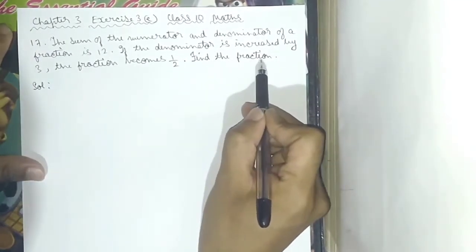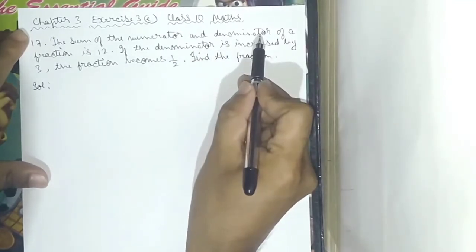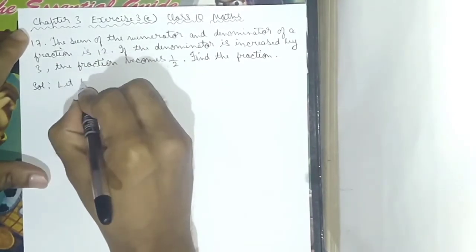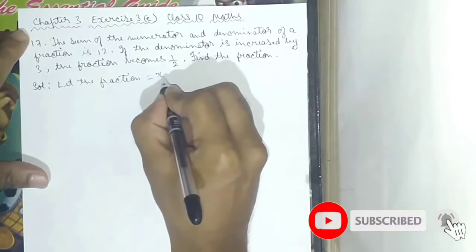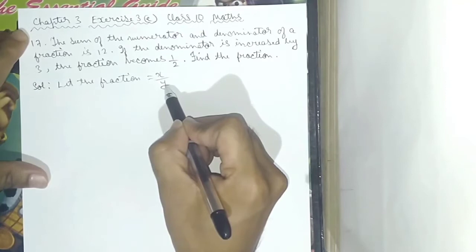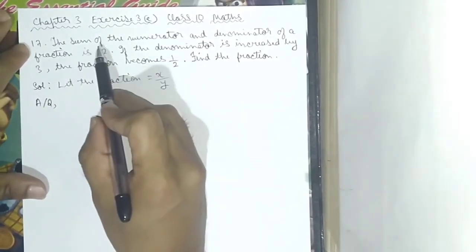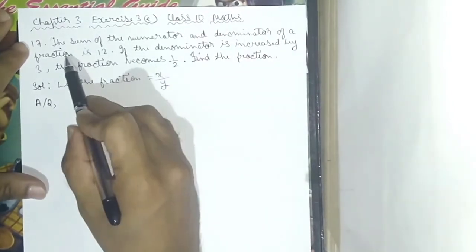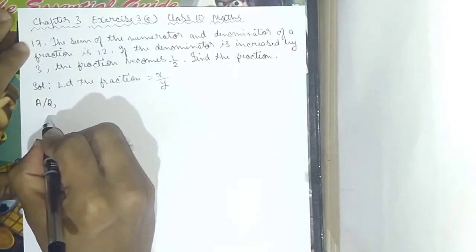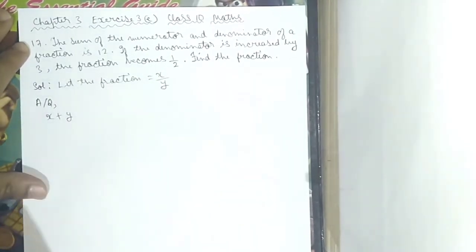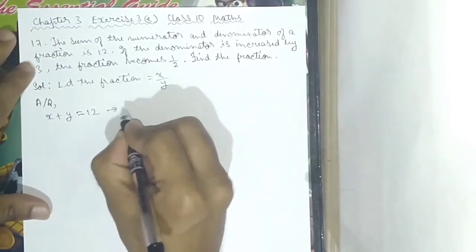The fraction has a numerator and denominator. Let the numerator be x and the denominator be y, so the fraction is equal to x by y. According to the question, the sum of the numerator and denominator is 12, so x plus y is equal to 12. This is equation 1.